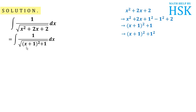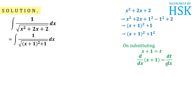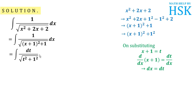Now, an idea must be clicking that we should substitute x plus 1 equal to t. So, substituting x plus 1 equal to t and differentiating both sides with respect to x, I get dx equal to dt. Placing dx as dt and x plus 1 as t, I get this as dt upon under root of t squared plus 1 squared.